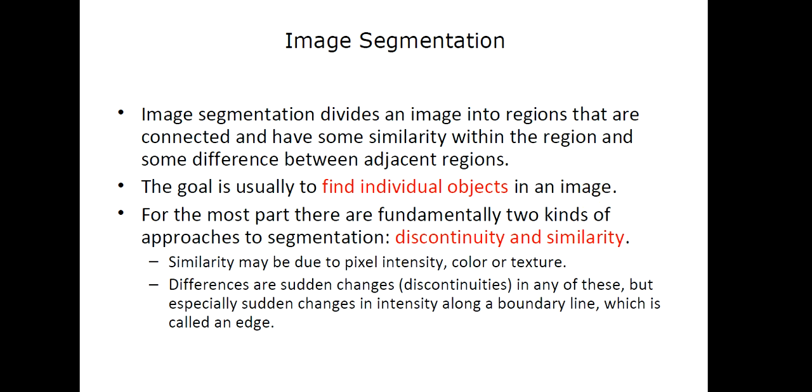We perform image segmentation to find some objects of interest in our input image. Just for example, while detecting tumor, we perform the segmentation of the tumor image to segment that tumor. This means to locate the tumor or to particularly focus on that tumor itself. Now, there are actually two kinds of approaches to segmentation: discontinuity based and similarity based.